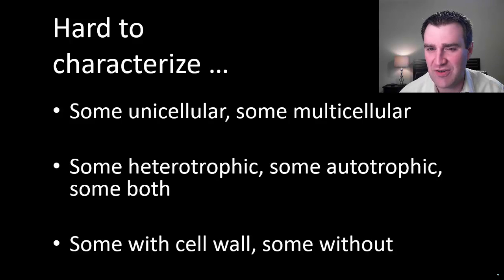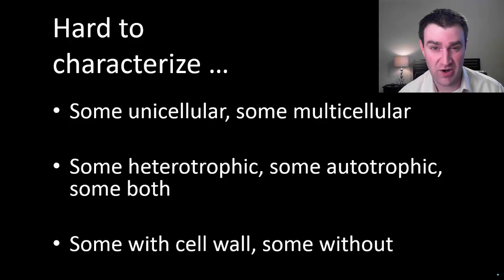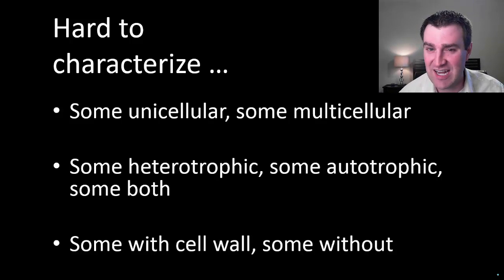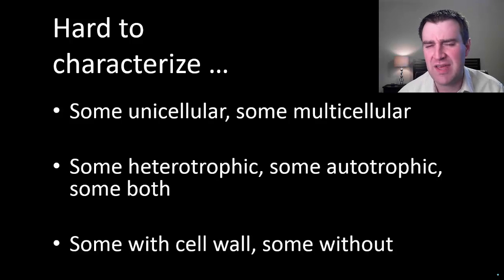That's going to make it really hard to characterize what protists are. Many groups in the other kingdoms are easily defined, but here some protists are unicellular while others are multicellular. Some are heterotrophs, some are autotrophs, and some are actually kind of both. Euglena are interesting organisms that eat others but also still have chloroplasts for photosynthesis. Some protists have cell walls, some don't, and those cell walls are made of very different materials for different species. So it's just really hard to pin them down in any particular way like most other kingdoms.